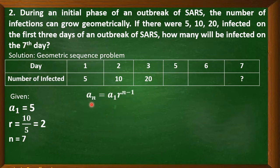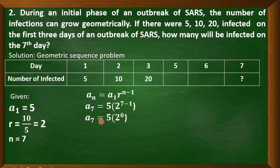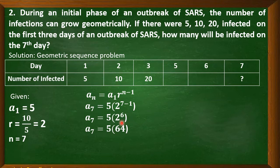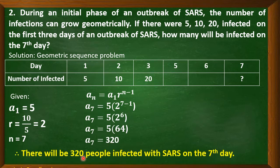Write the N-term formula of a geometric sequence, then substitute. Our first term is 5, common ratio is 2 to the power of 7 minus 1. Simplify: bring down 5, bring down 2, and 7 minus 1 is 6. So 2 to the power of 6, meaning we multiply 2 six times, which equals 64. Next, multiply 5 times 64 — that equals 320. Therefore, there will be 320 people infected with SARS on the seventh day.